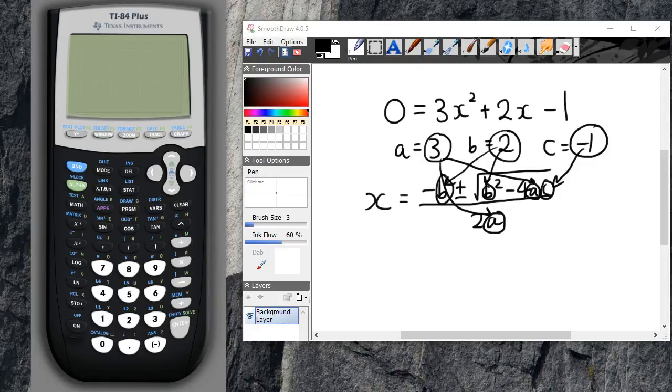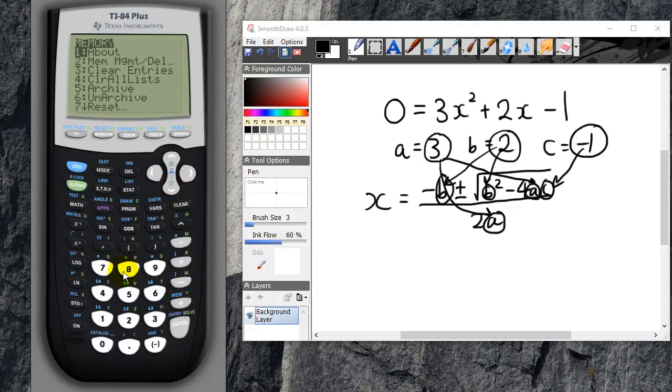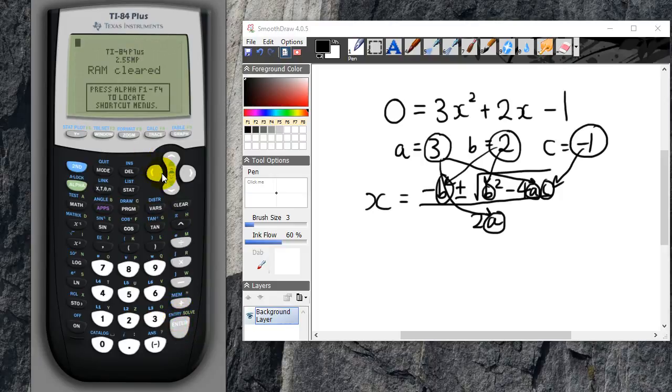In the calculator, what I'm going to do is after turning it on, I'm going to clear the memory first. Just clear everything that's in there. And then I'm going to input these three numbers into the variables a, b, and c.